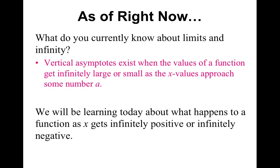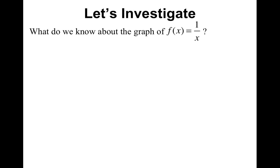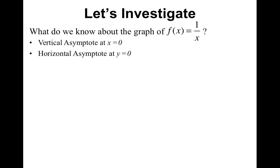What we're going to be doing today is learning about what happens to a function as x gets infinitely positive or infinitely negative. Let's investigate the very basic parent function of a rational function, which is f of x equals one over x. We currently know that there's a vertical asymptote at x equals zero — the function does not exist when x equals zero because it's in the denominator. And we also know that it has a horizontal asymptote at y equals zero.